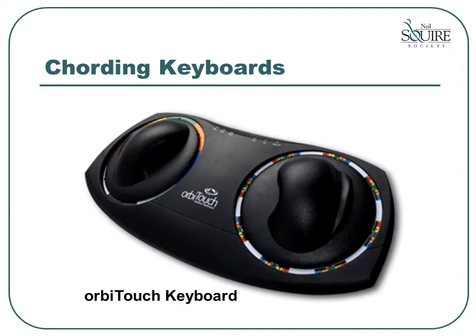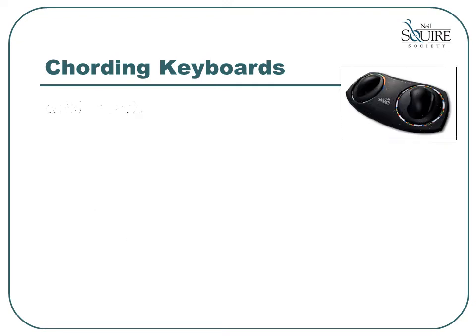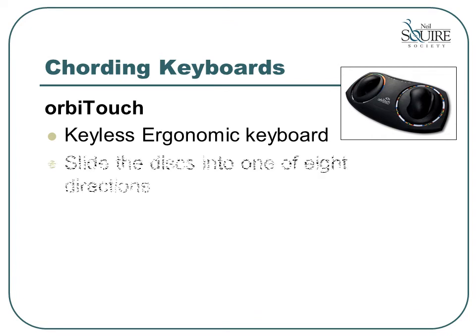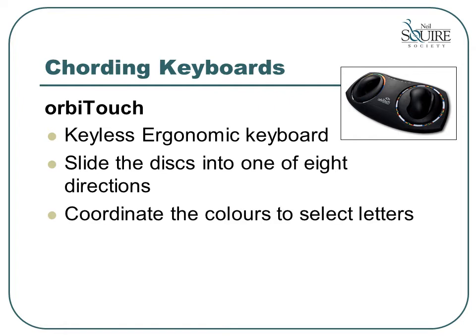Another example of a cording keyboard is the Orbi Touch keyboard. This keyboard is very unusual because it does not have any standard keys on it. To type on this keyboard, you slide the disks in one of eight directions. It is necessary to coordinate the color selection on the right disk with the letter selection on the left disk to type a letter, and it also provides mouse control.